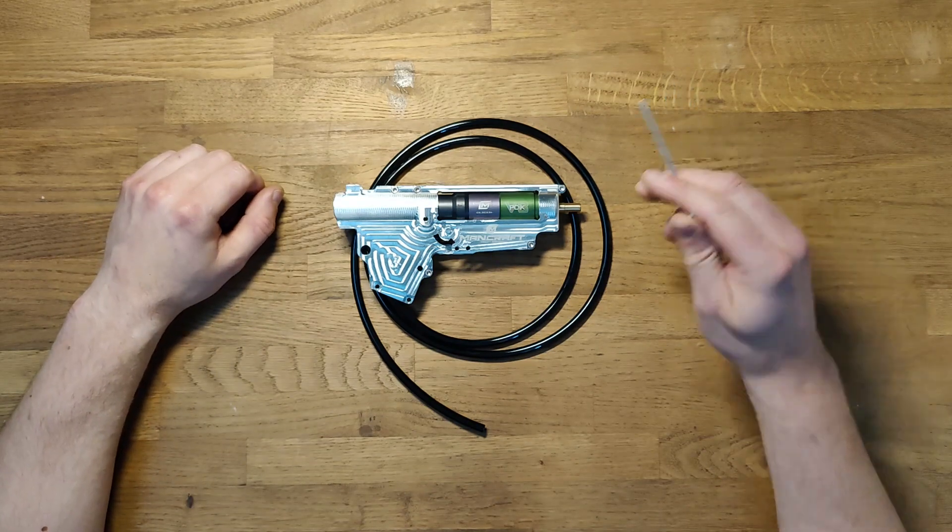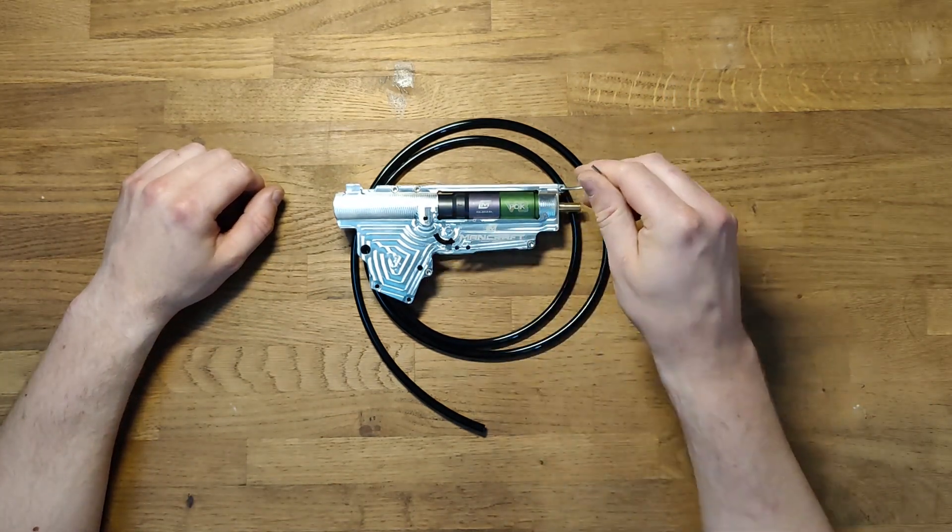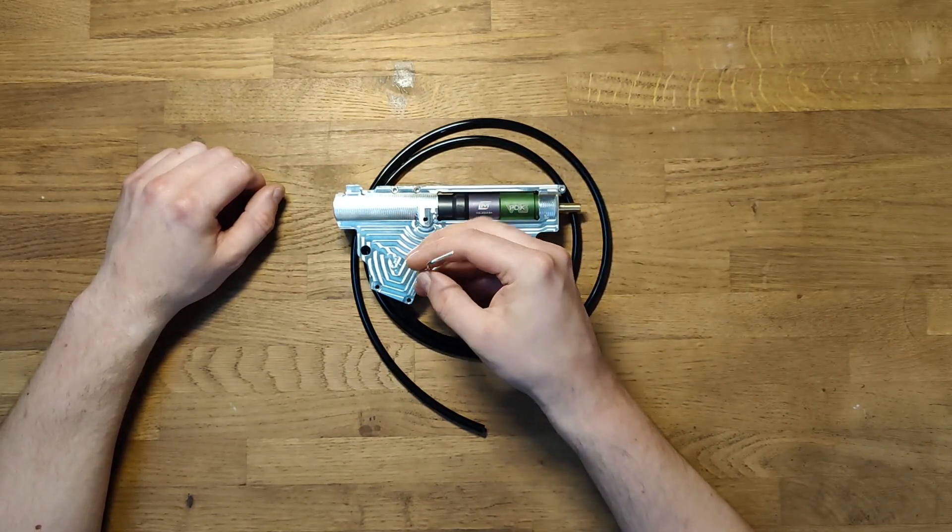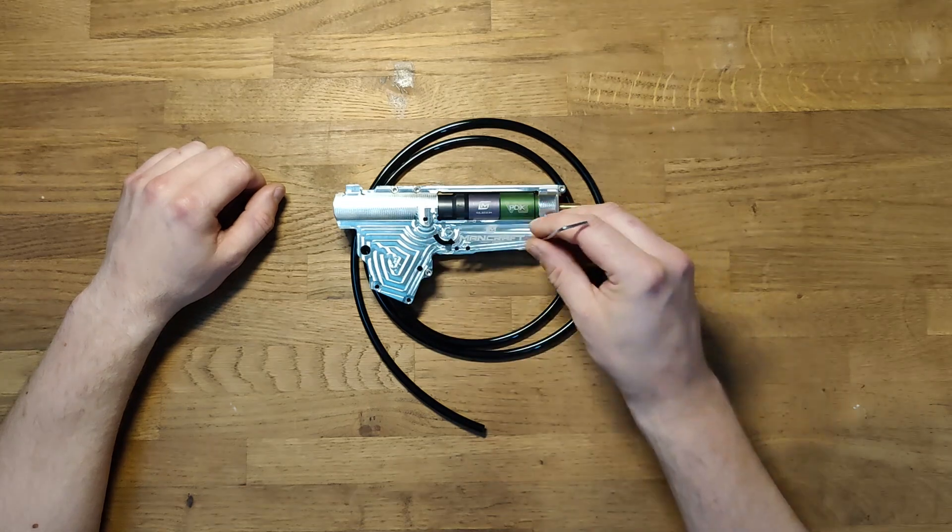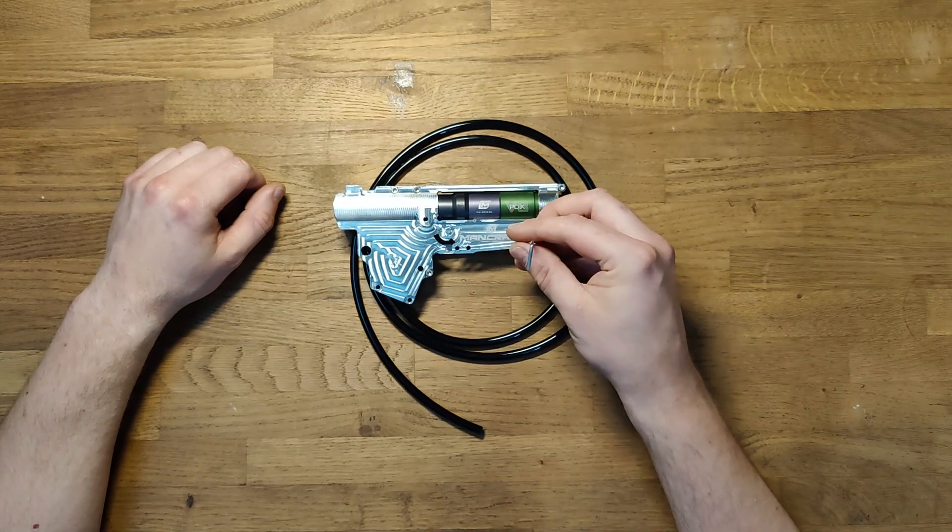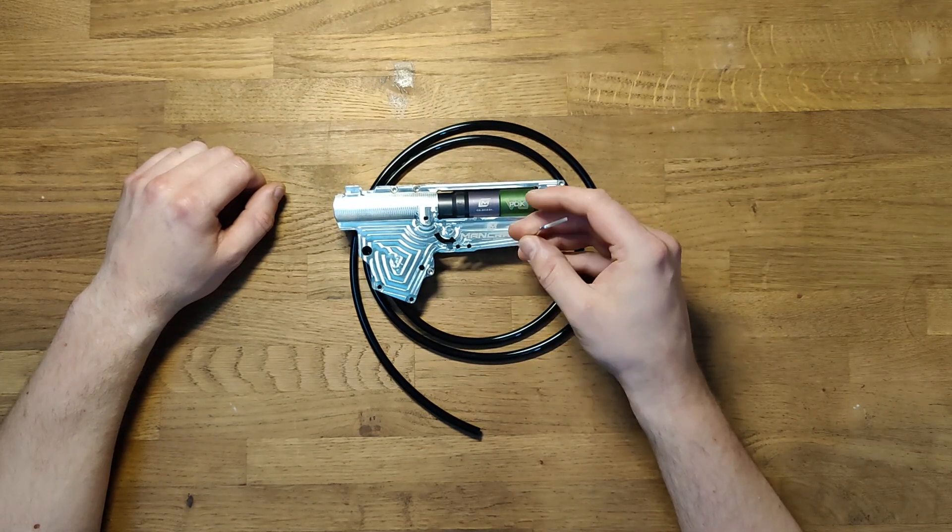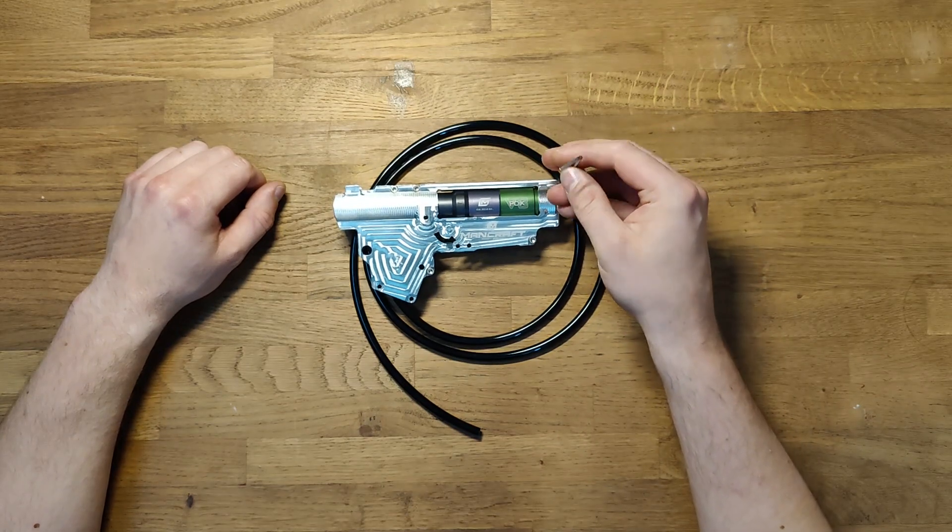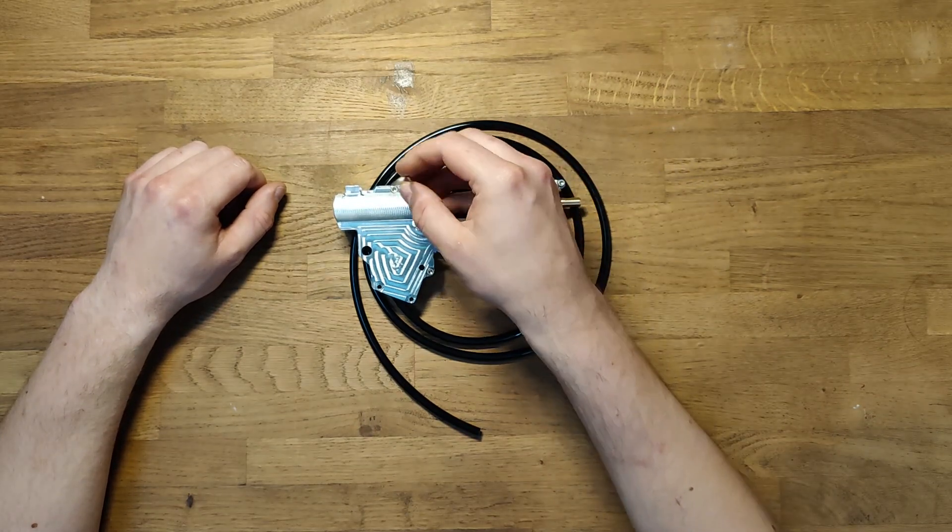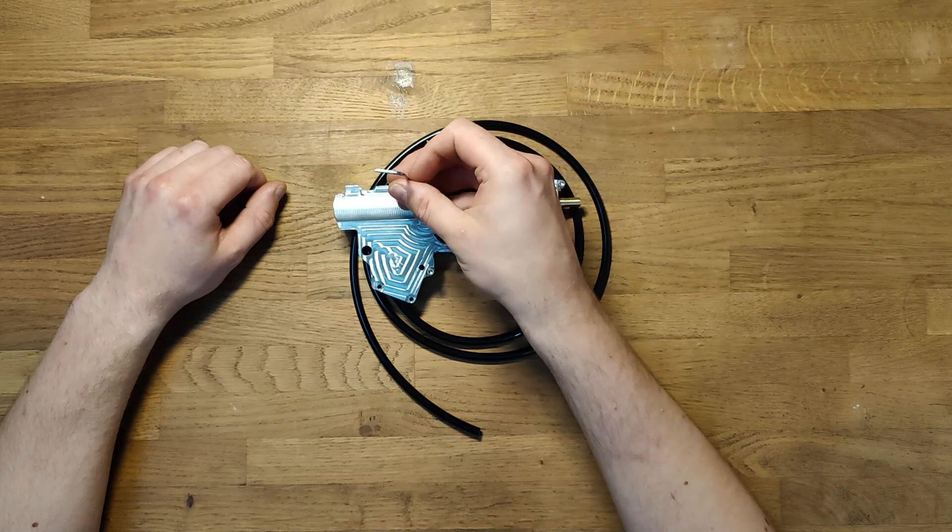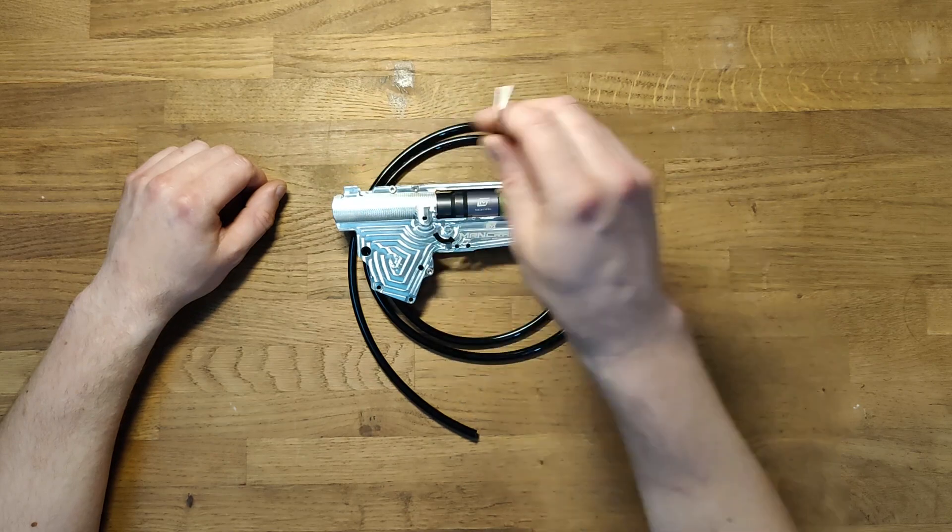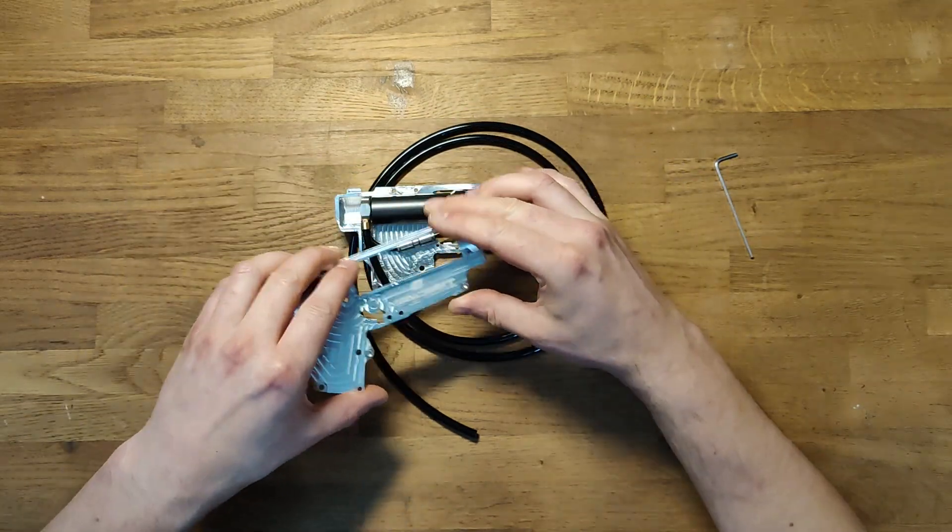First we have to take off the shell from your engine. Unscrew all the bolts holding it together. Take off the shell and put it aside.